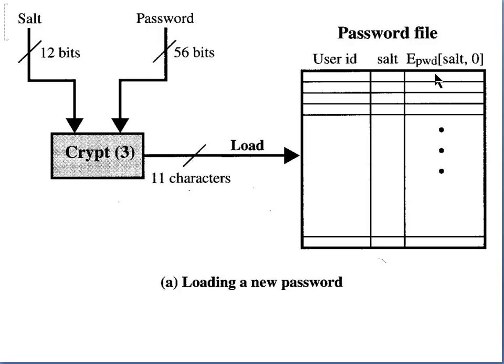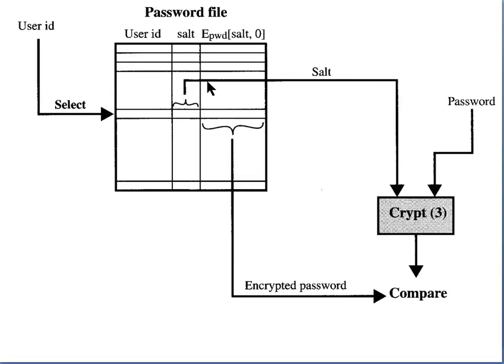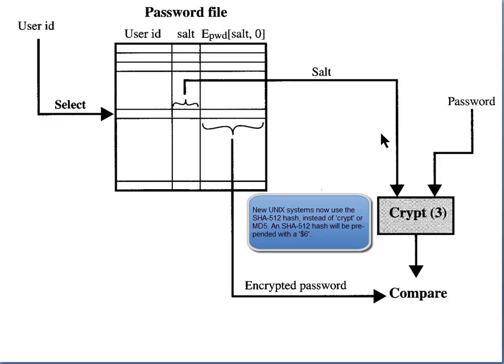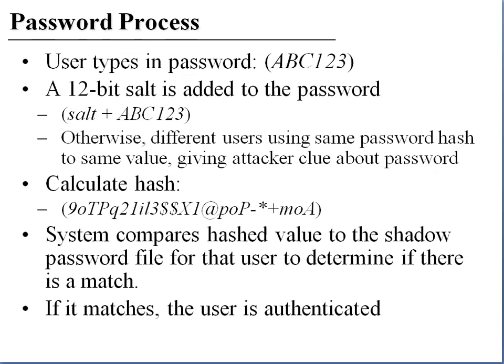Why do we need the salt? Two identical passwords will always hash to the same output. Therefore, if root were able to look into the shadow file and notice two hashes were exactly the same, they would know those two passwords were identical. With the salt, that guarantees all hashes for all users will always be different. During the authentication process, when you type in your password, the system extracts the salt, adds it to the password, hashes it, and then compares it to the encrypted password in the shadow file. If those match, you've been authenticated.